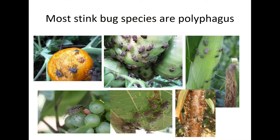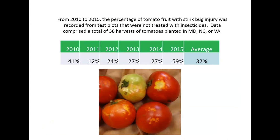Where you see the most problems with stink bugs and tomatoes is on farms with a lot of different crops. Organic vegetable farms with many surrounding trees and wood borders are the perfect storm of habitat for stink bugs — they do extremely well in those kinds of habitats.